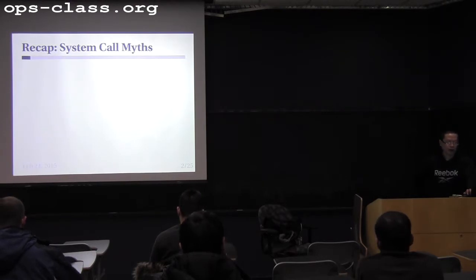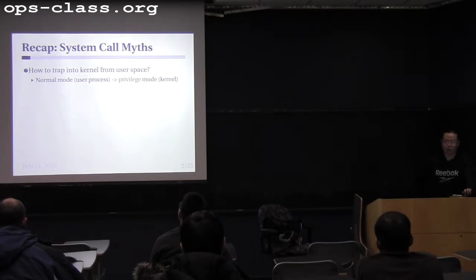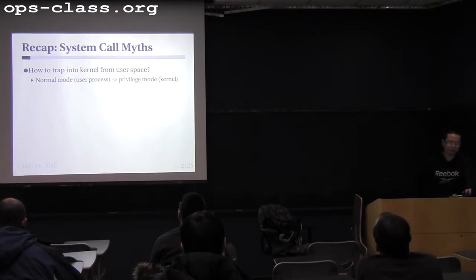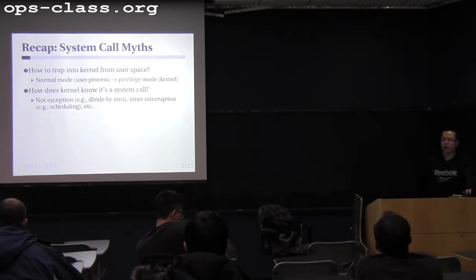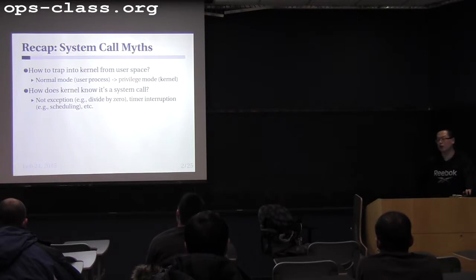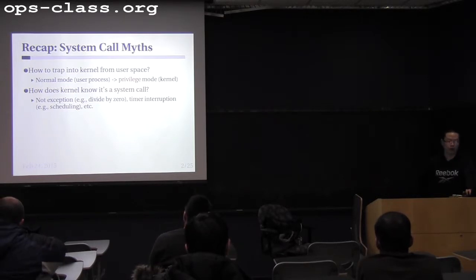Before we talk about today's contents, let's do a quick recap of what we talked about last time. We talked about the big picture of syscalls. I assume you now have a better idea of these questions. For example, how does a user trap into kernel space? You already know that using the syscall instruction. And how does a kernel know it's a syscall instead of other interruption? We basically have a number assigned for each reason of the interruption.